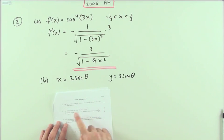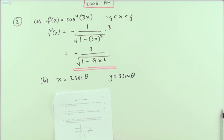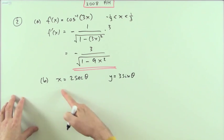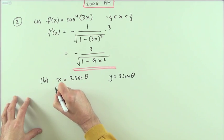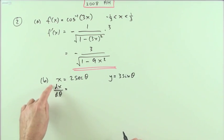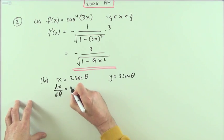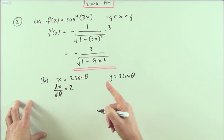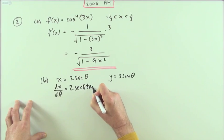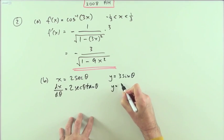Second part, number two. Given these two parametric equations, find the derivative dy by dx in terms of theta, which it would be anyway. So just differentiate those with respect to the parameter. dx by d theta—the two is just the coefficient. Sec goes to sec tan: sec theta tan theta. And sine just goes to cosine.